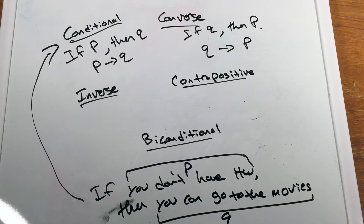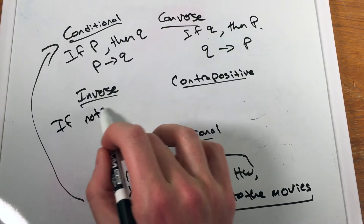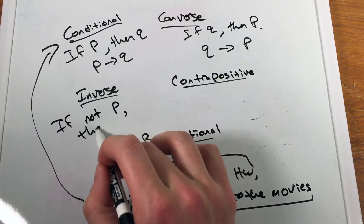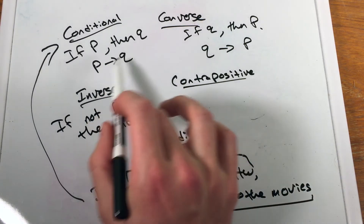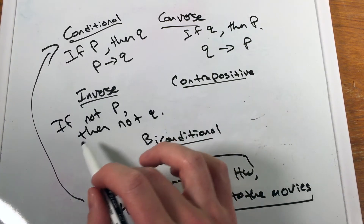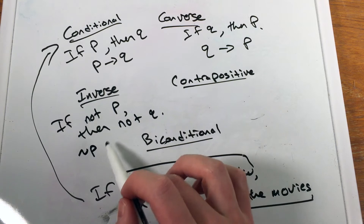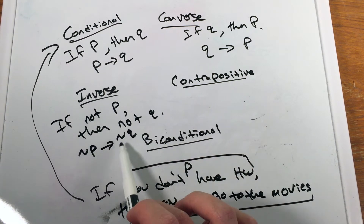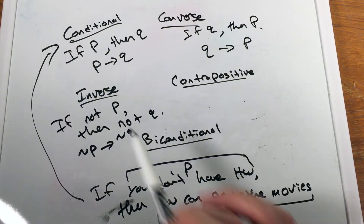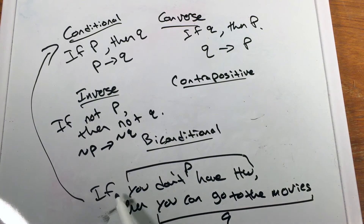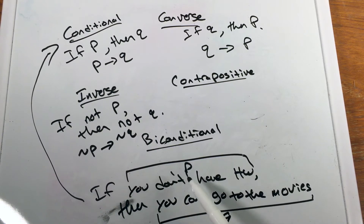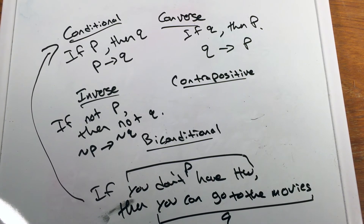Now the inverse — the inverse is 'if not P, then not Q.' It takes the original conditional statement and negates both parts. So the inverse of our original statement would say: if you do have homework, then you cannot go to the movies. We're negating both statements.